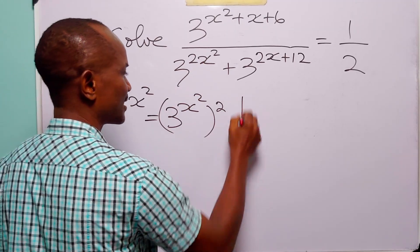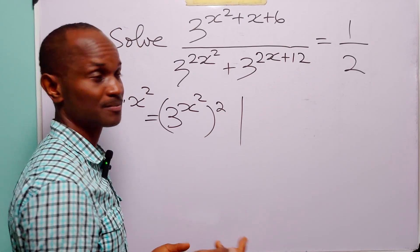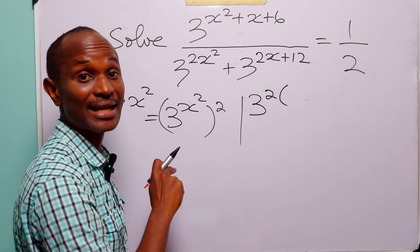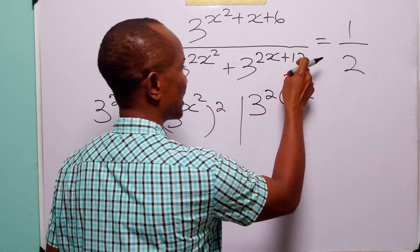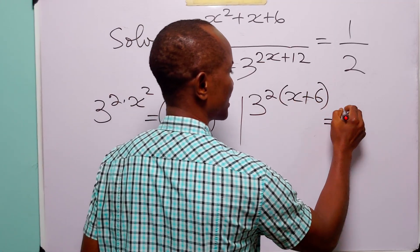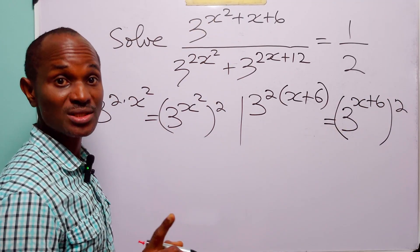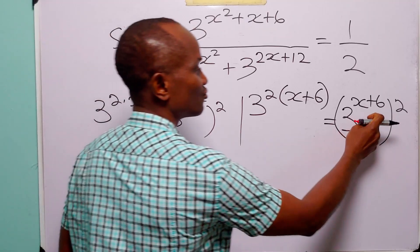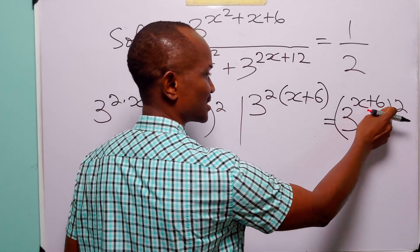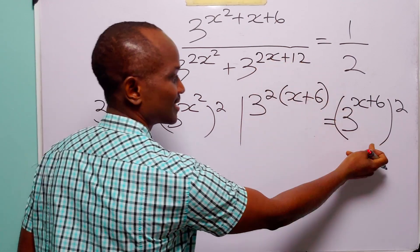So by writing this in this way, we haven't changed anything. Now, in this case, when you look at this exponent, you will see that we have a common factor, which is 2. So this can be written as 3 to the power 2 multiplied by 2x divided by 2, which is x. And 12 divided by 2 is equal to 6. This can also be written as 3 to the power x plus 6, squared. Because to remove this bracket, all we do is multiply these two powers, and 2 times x plus 6 gives us 2x plus 12. So we haven't changed anything by writing this in this form.